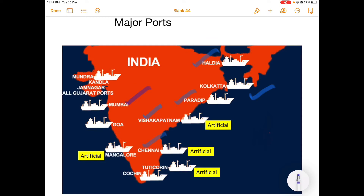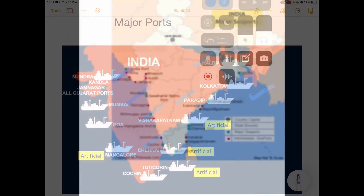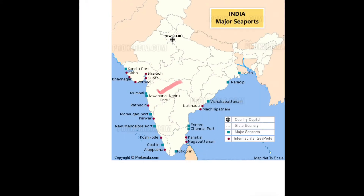Mumbai is a natural harbour on the west coast and the biggest port of India. Kandla port in Gujarat is a tidal port. Jawaharlal Nehru Port (Navasheva), near Mumbai, is the biggest ultra-modern seaport of Mumbai, equipped with modern facilities and mechanised containers, established to reduce the burden on Mumbai port.